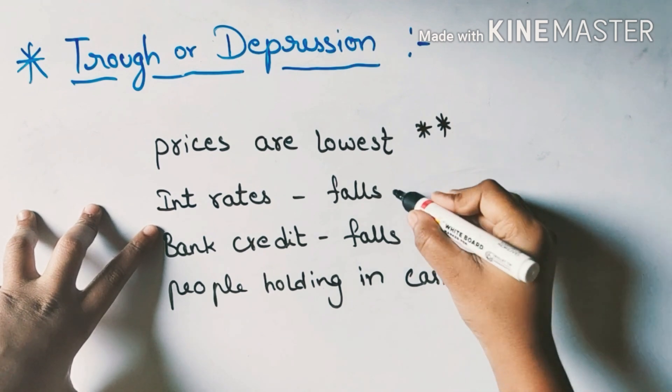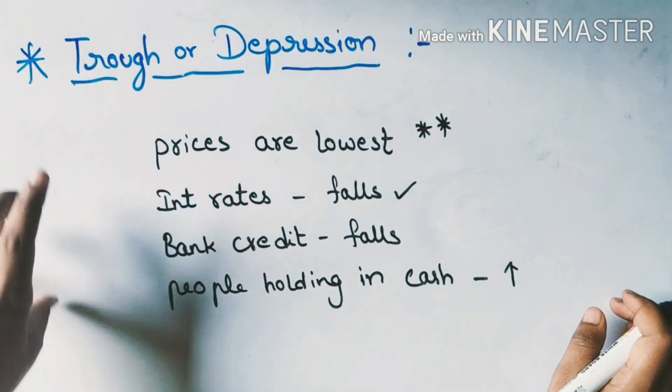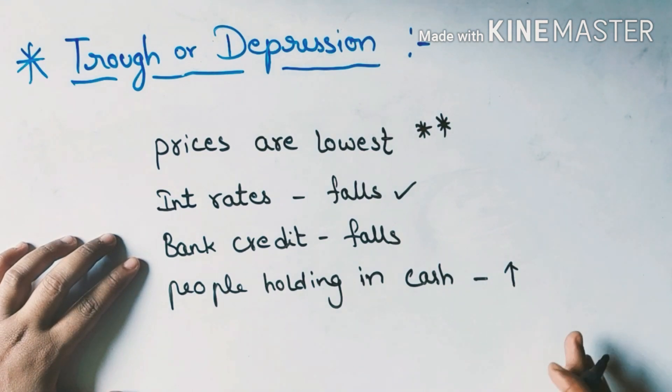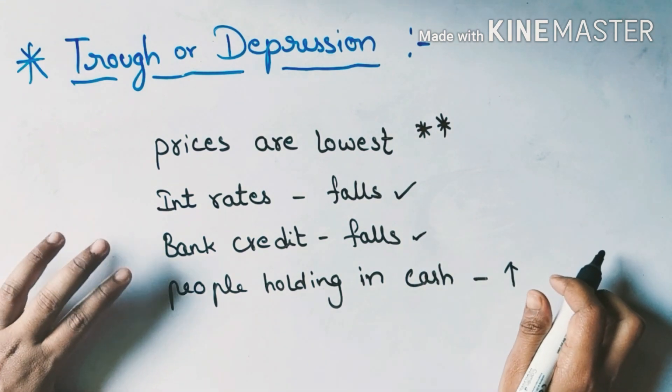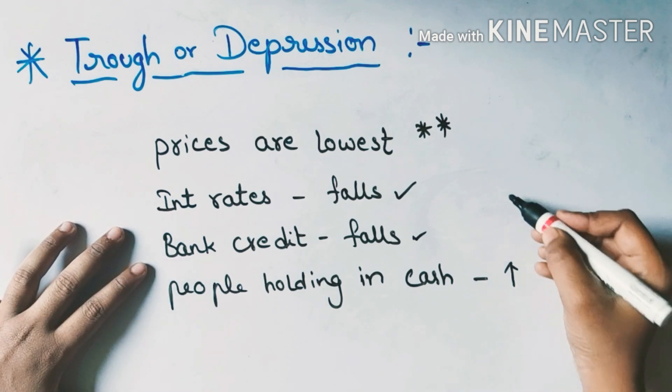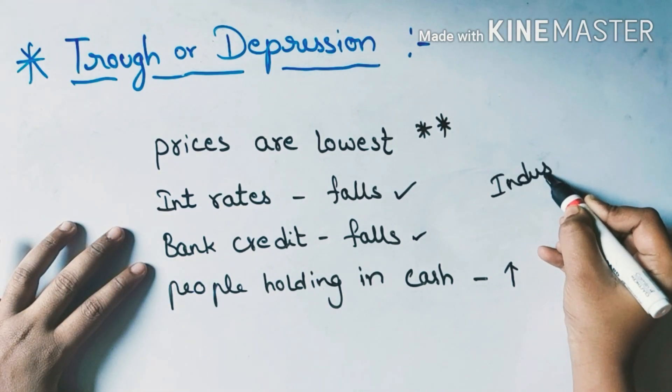Interest rates fall in the trough or depression phase. Bank credit is also weak. Banks are weak.